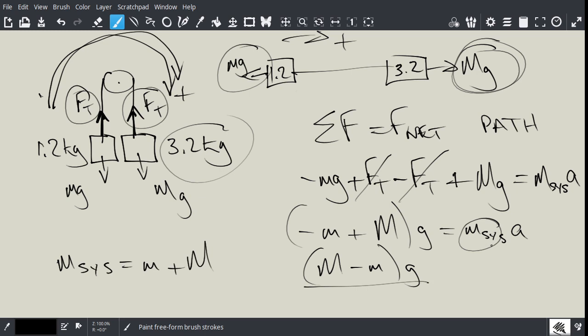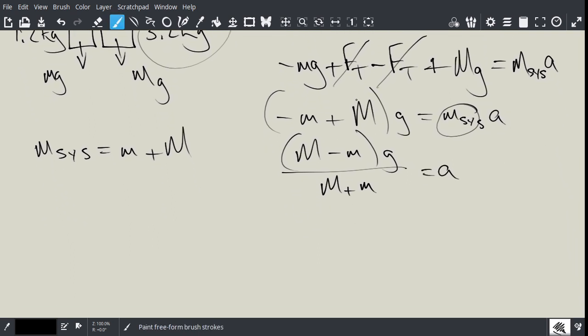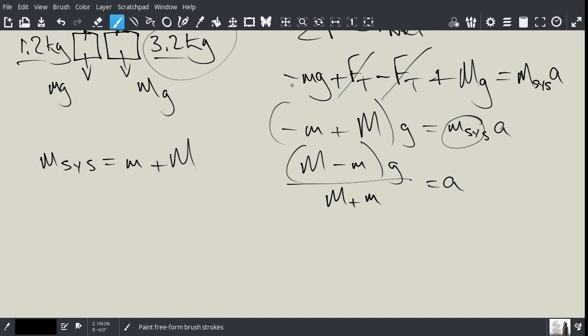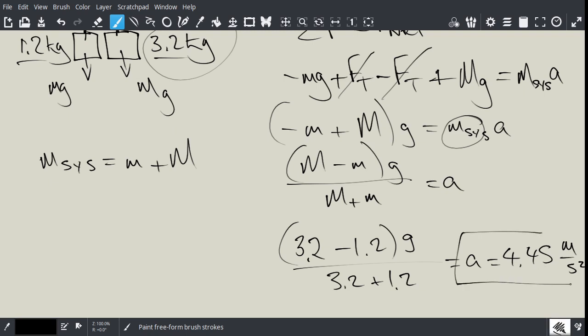Okay, so now, I can plug in my values. So, 3.2 minus 1.2 times G all over 3.2 plus 1.2 equals A. And if we plug that through our calculator, so I got 4.45 meters per second squared for the acceleration.